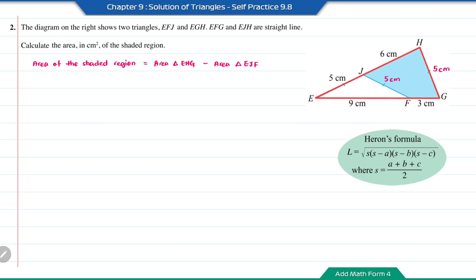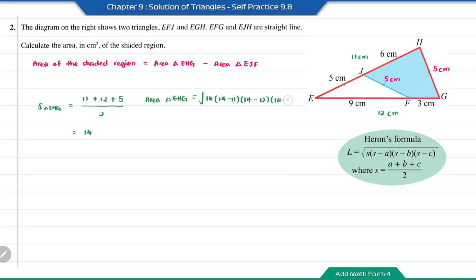The length EH equals 5 plus 6, which is 11 cm, and the length EG equals 9 plus 3, which is 12 cm. The semi-perimeter is (11 plus 12 plus 5) divided by 2, which equals 14. The area of triangle EHG equals √(14 × (14−11) × (14−12) × (14−5)), which equals 27.495 cm².